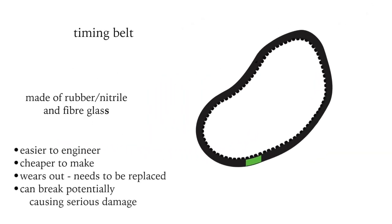Timing belts are made of rubber or nitrile and reinforced with glass fibers. They are easy to engineer and cheap to make. However, they also wear out and need to be replaced and they can break, potentially causing real damage to the engine.